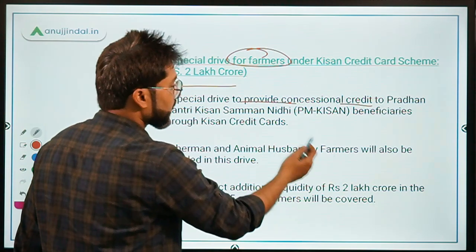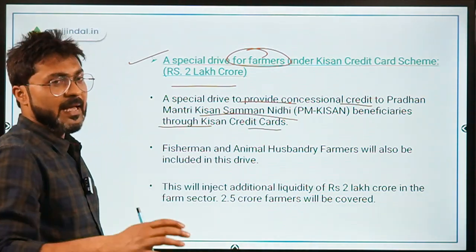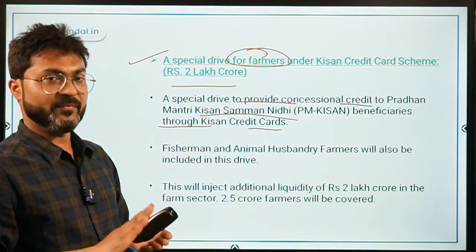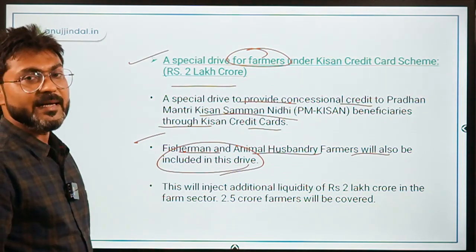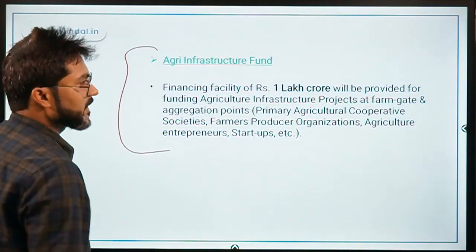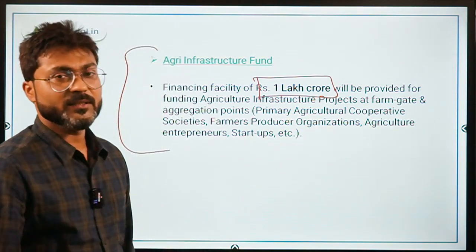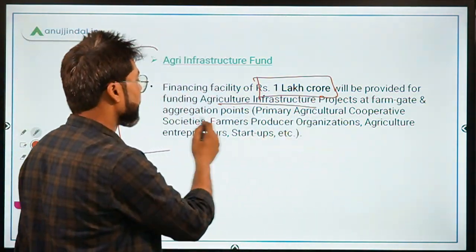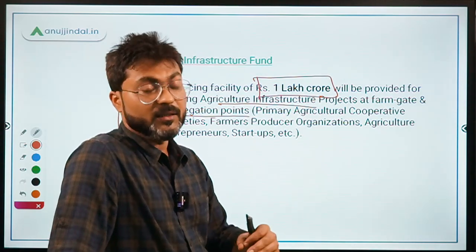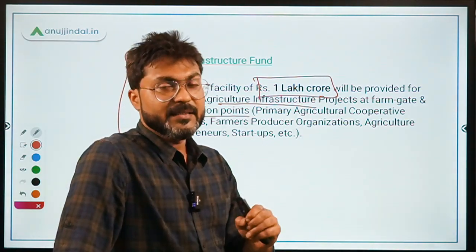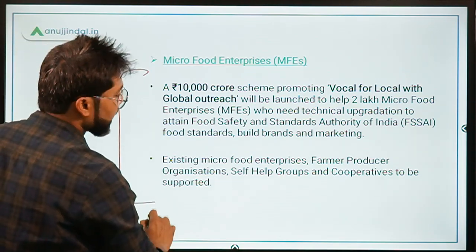The Kisan Credit Card drive also included fishermen and animal husbandry farmers. A ₹1,00,000 crore (1 lakh crore) Agricultural Infrastructure Fund was created to develop agricultural infrastructure at farm gates and aggregation points under Atmanirbhar Bharat Package Part 1.